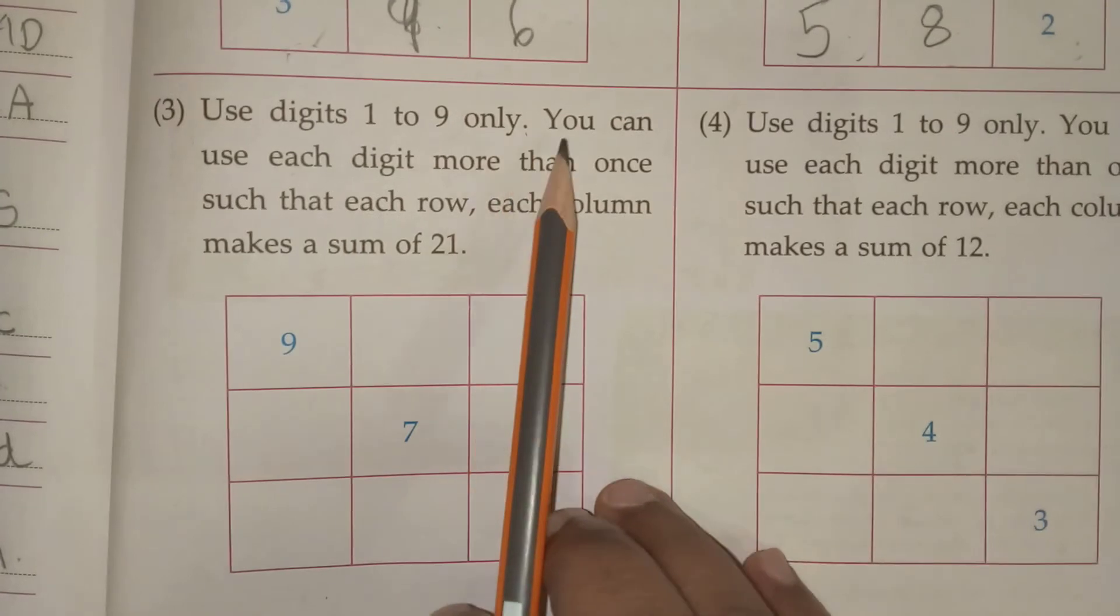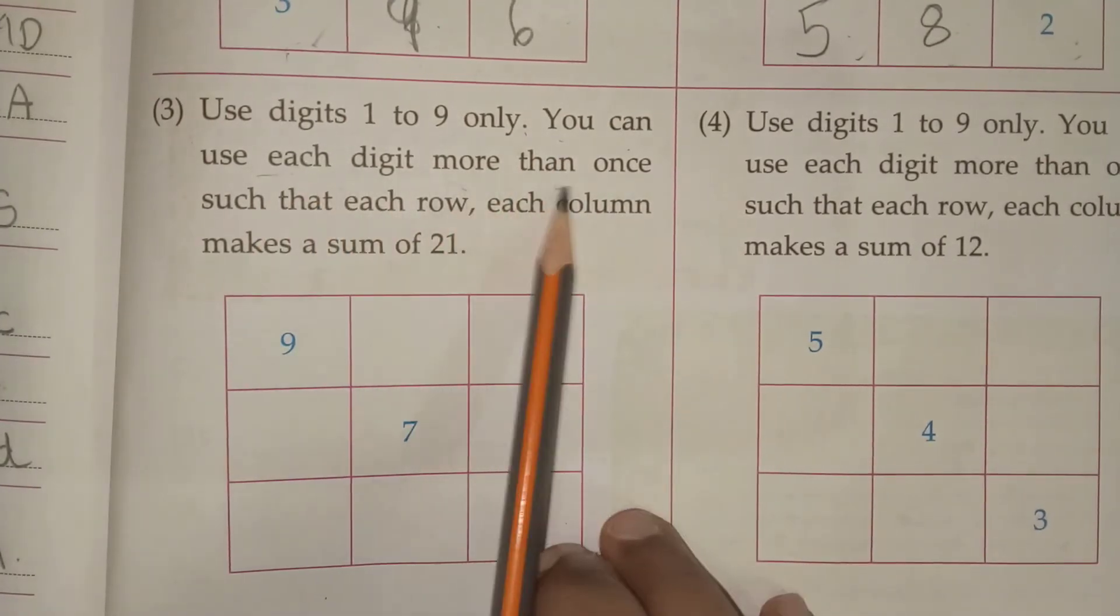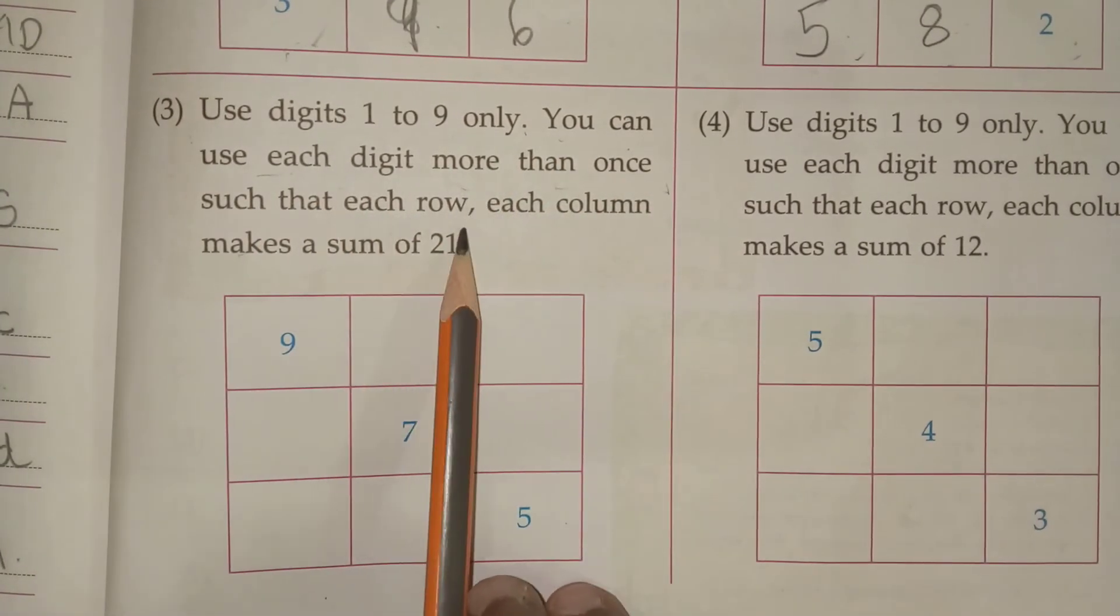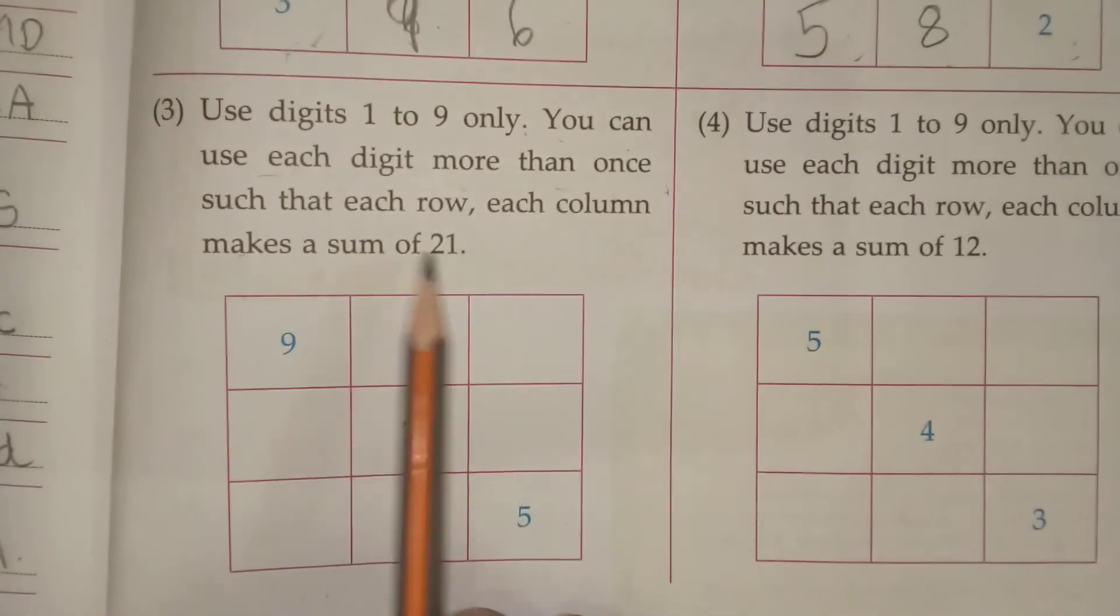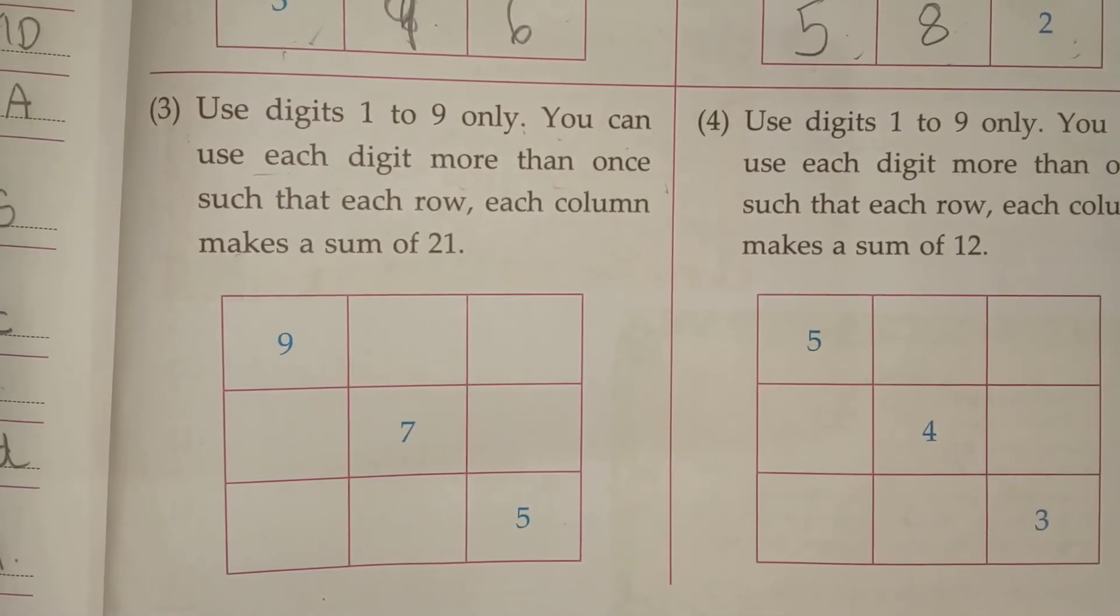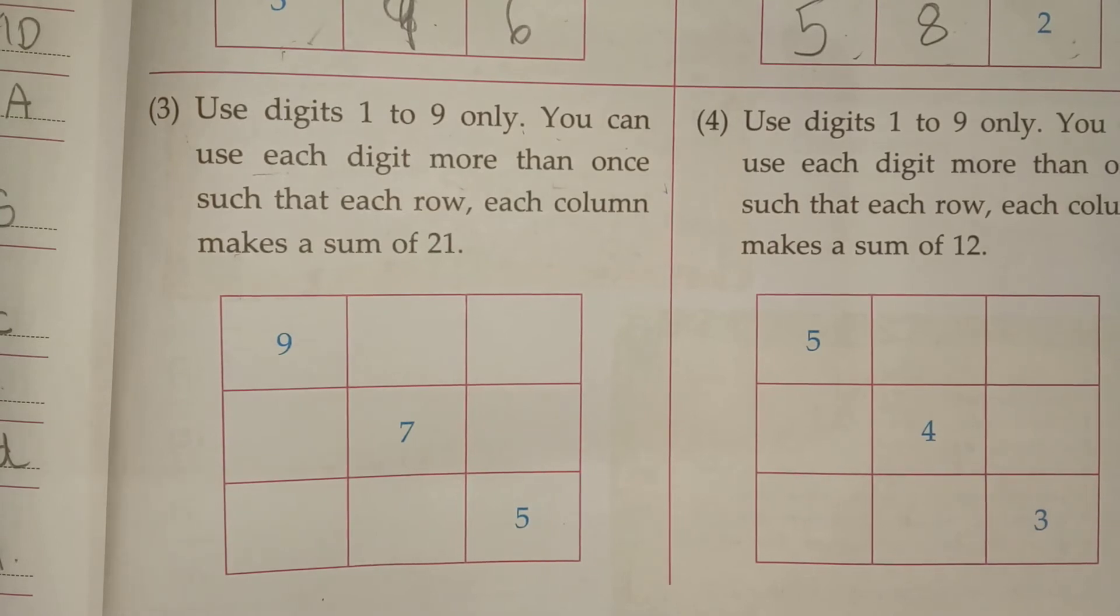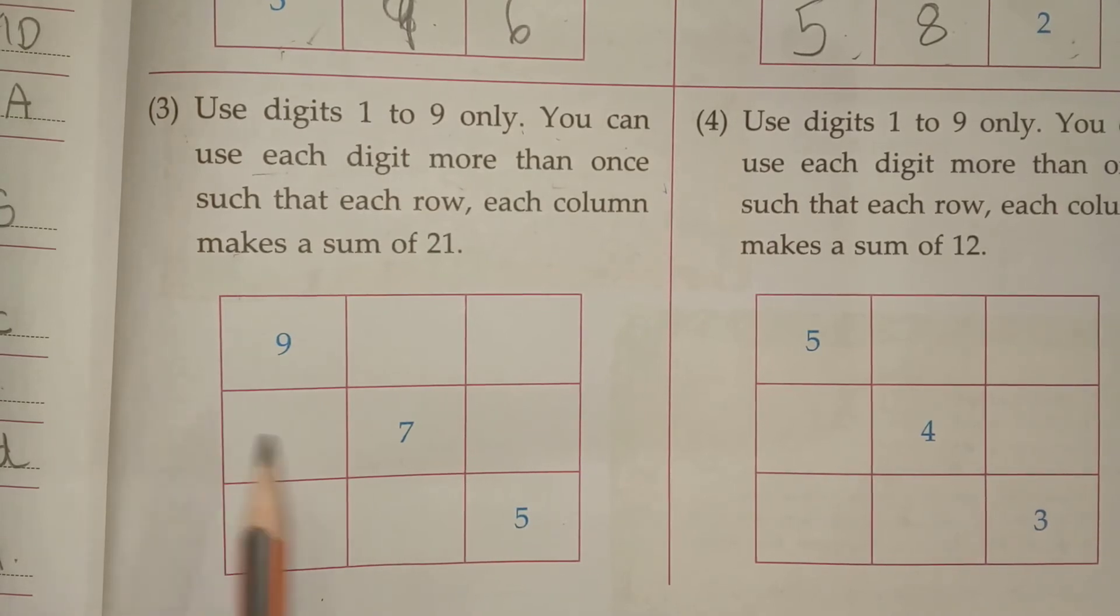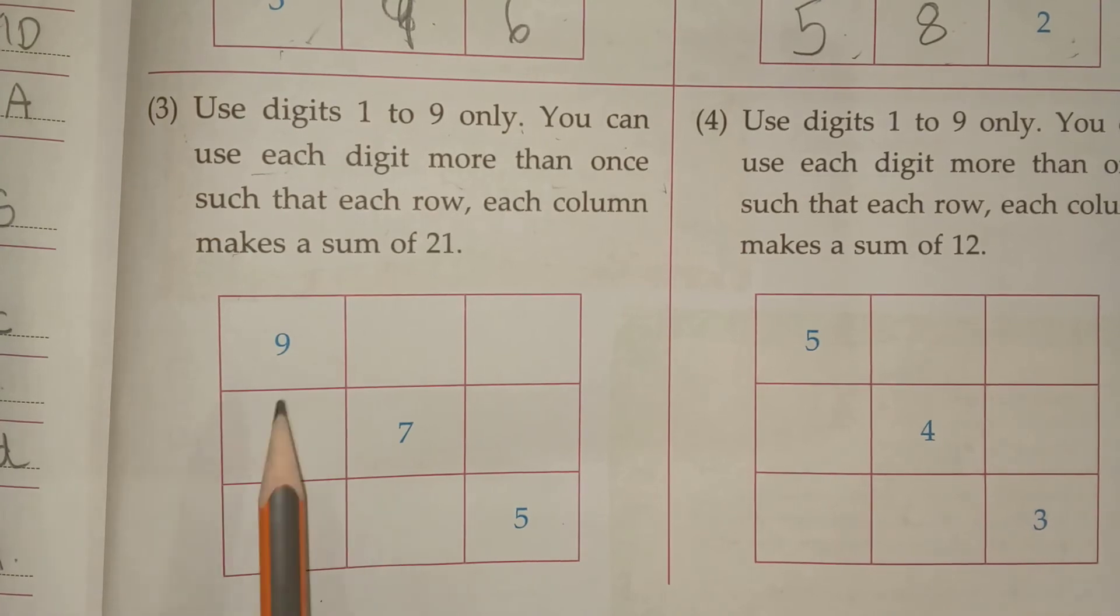Use digit 1 to 9 only. You can use each digit more than once such that each row, each column makes a sum of 21. See children here. We should make it as 21. Now we will see. 9, 7, 5. 9 plus 7, 16. 16 plus 5, 21.